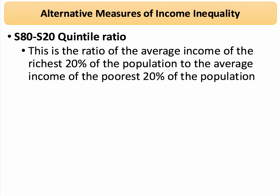The first is the S80-S20 quintile ratio. What this is: we take the incomes of the richest 20% of the population and we divide by the incomes of the poorest fifth, or the poorest 20% of households, and we get what's called the S80-S20 quintile ratio. The higher that ratio, the greater is the gap between top and bottom.